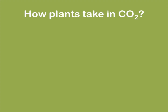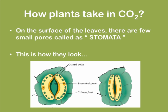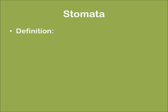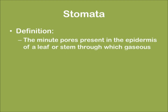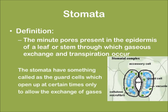Now let us learn how plants take in carbon dioxide. On the surface of the leaves, there are small pores called stomata. Let us learn about stomata — definition: these are minute pores present on the epidermis of a leaf or a stem through which gaseous exchange and transpiration occurs. Given below is a photograph of a stomata. The stomata has guard cells which open only at certain intervals to allow the exchange of gases.